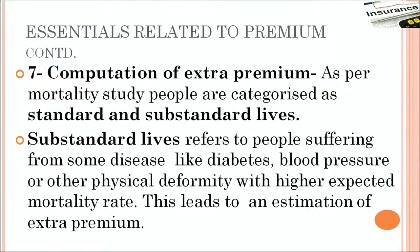Computation of extra premium. As per the mortality study, people are categorized as standard and substandard life. Standard life refers to a normal life with a normal risk exposure in terms of physical hazard or any other hazard. When we talk about substandard lives, there are increased risks on those lives, may be due to occupation or their physical conditions. People suffering from diseases like diabetes, blood pressure, or other physical deformity have a more than average expected mortality rate, and to cover that extra mortality risk they are classified as substandard lives and charged an extra premium.